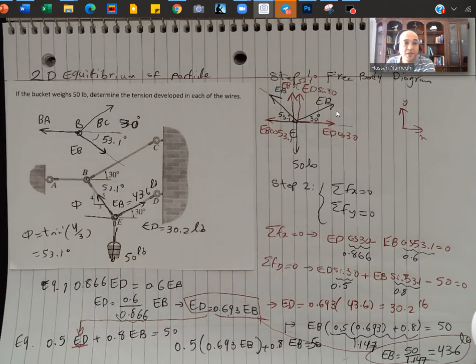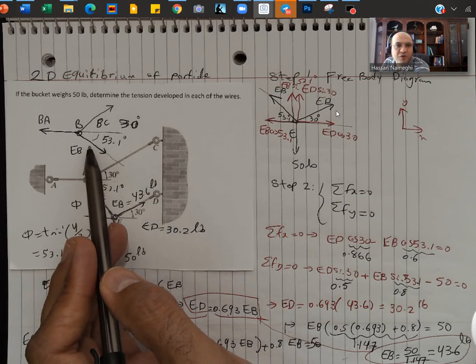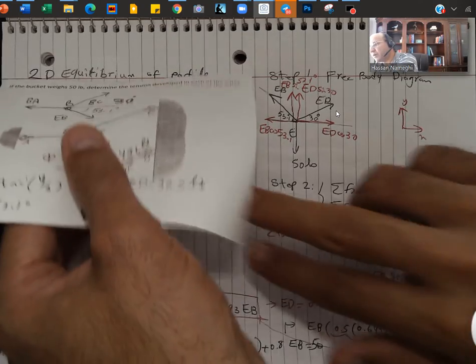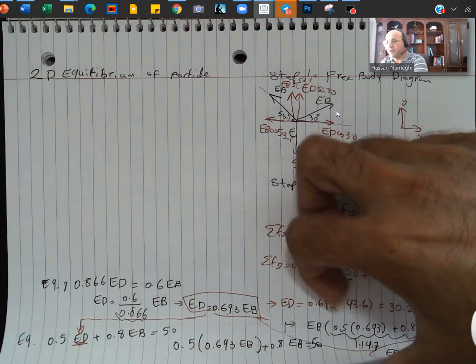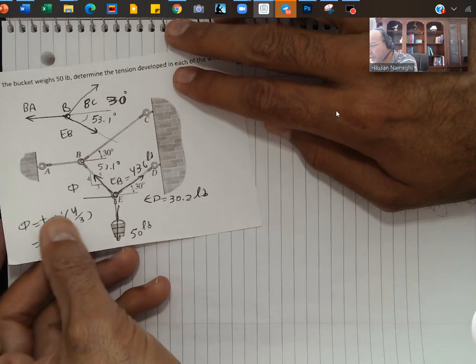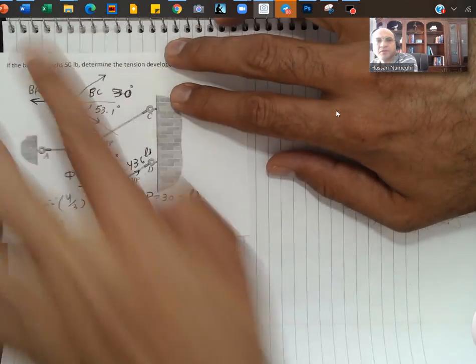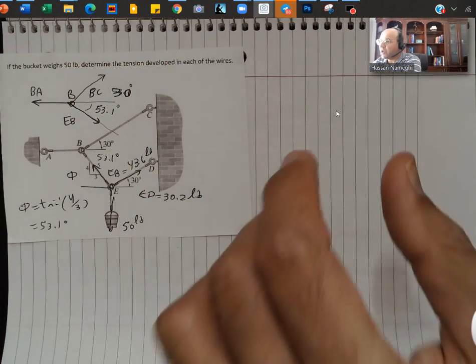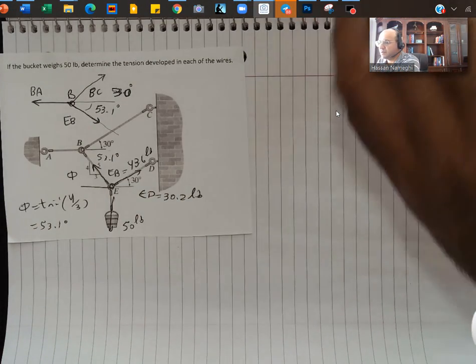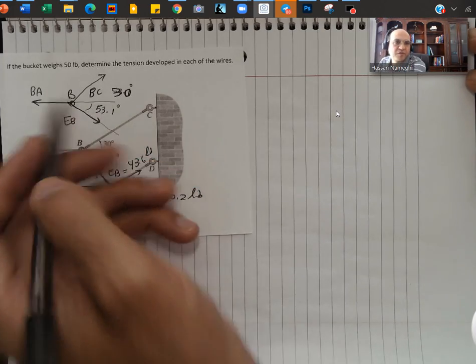Now moving on to point B, we already know one force. And then we want to find the second force. So let's move on to the second page. I'm going to borrow this diagram from here, bring it to the second page and continue our calculation.